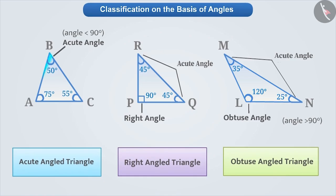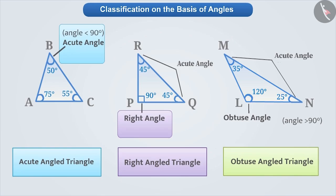With this understanding, we can classify the triangles in the following ways. Triangles in which all angles are acute angles are called acute angle triangles. Triangles with one right angle are called right angle triangles. Remember that the right angle of a right angle triangle is represented with a small square symbol. Therefore, if an angle in a triangle is marked like this, then you can easily identify that triangle as a right angle triangle. Similarly, triangles in which one angle is an obtuse angle are known as obtuse angle triangles.